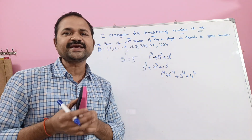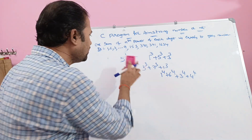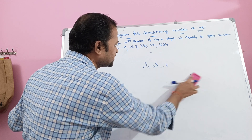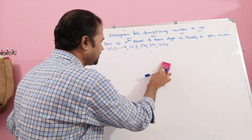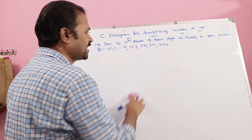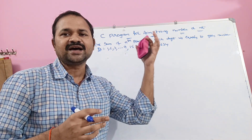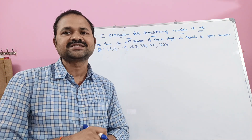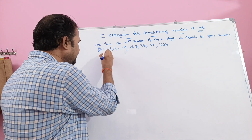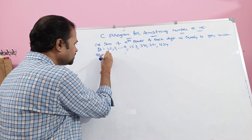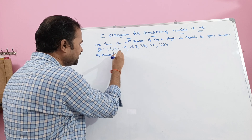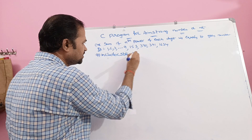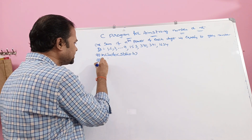So this is about what an Armstrong number is. Now let us write a C program to check whether the given number is Armstrong number or not. We will discuss the logic in parallel. So first, hash include stdio.h, because we are using printf and scanf functions, and those two functions are present in stdio.h.